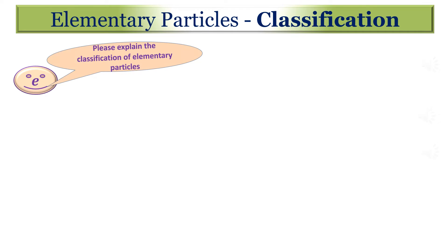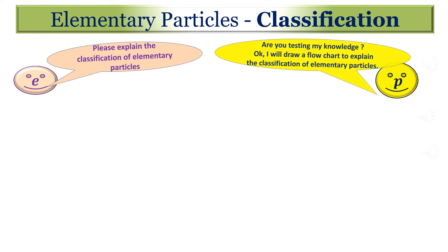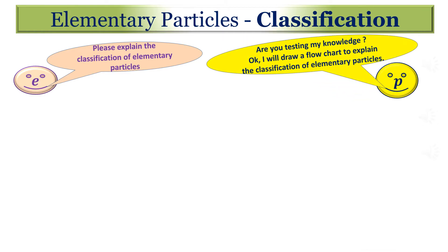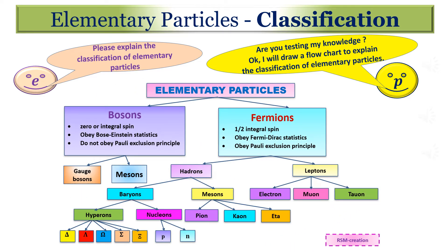Please explain the classification of elementary particles. Are you testing my knowledge? Okay, I will draw a flow chart to explain the classification of elementary particles. The particles and their antiparticles are characterized by mass, spin, charge, magnetic moment, parity, strangeness, isospin, etc. Particles with zero or integral spin are called bosons. They obey Bose-Einstein's statistics.